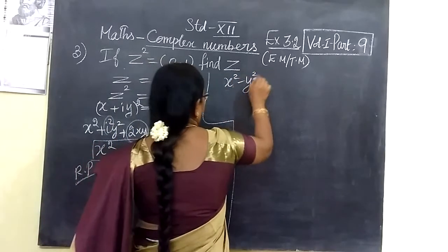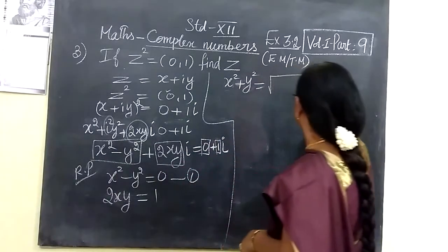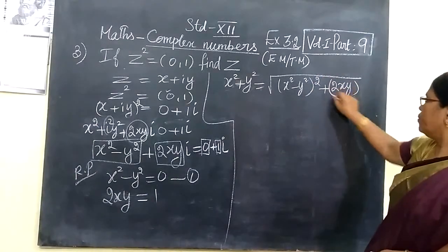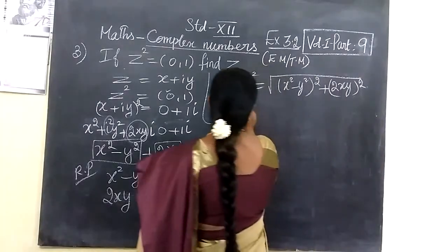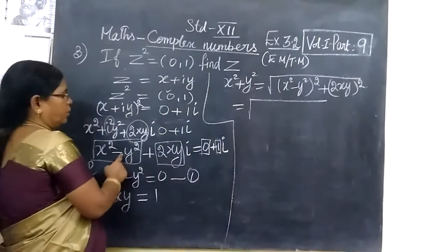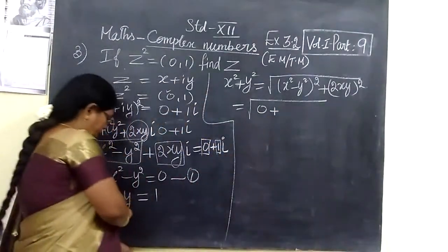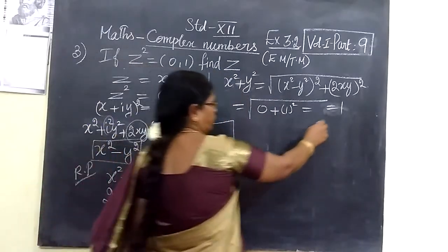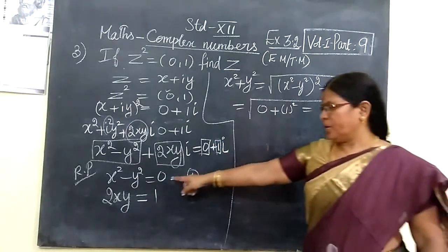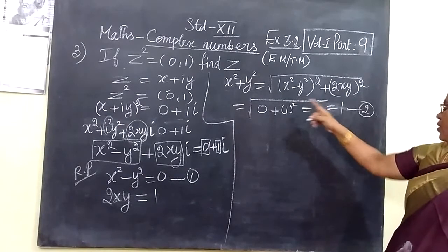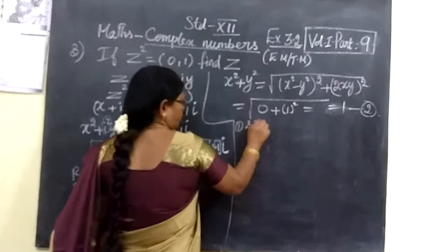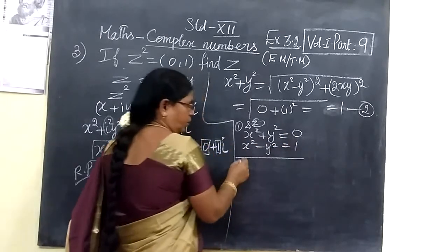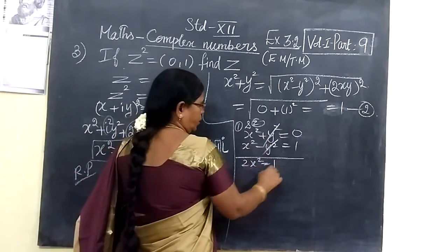We know the formula: x² plus y² is equal to the square root of (x² minus y²) whole square plus (2xy) whole square. So substituting, x² minus y² is 0 and 2xy = 1. So x² plus y² = √(0² + 1²) = √1 = 1. So equation 1 is x² minus y² = 0, and equation 2 is x² plus y² = 1.